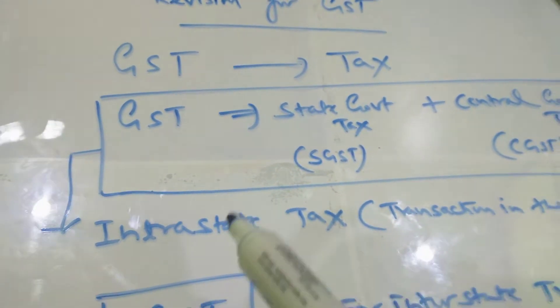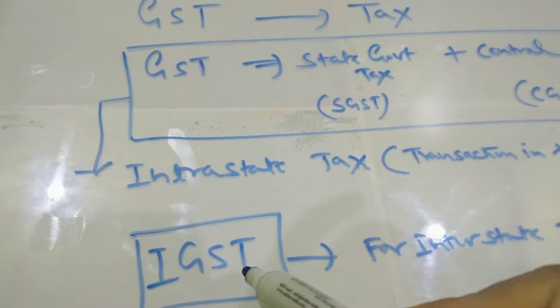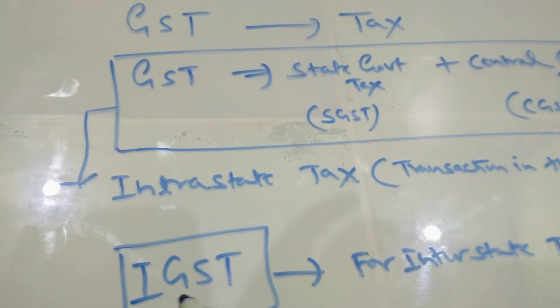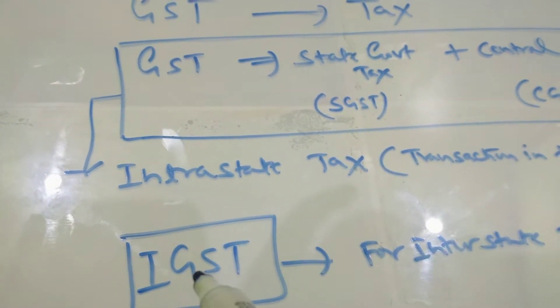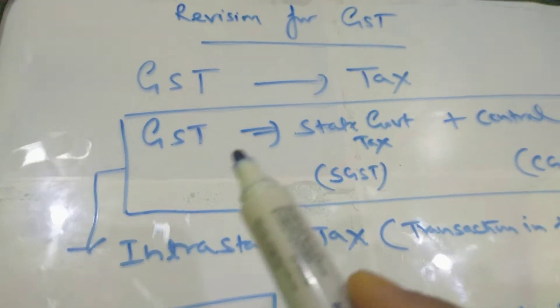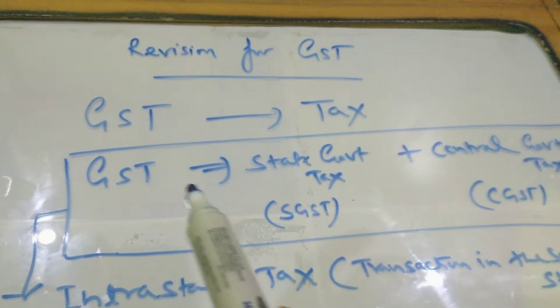But if you transfer your business from one state to another state, then it is called IGST. Full form of IGST is integrated goods and service tax. Basically, this GST is divided into two parts.